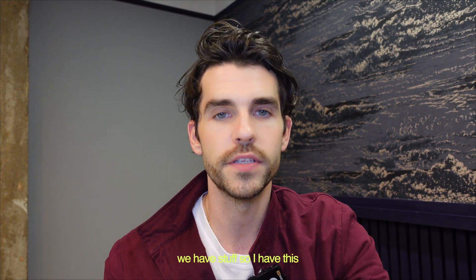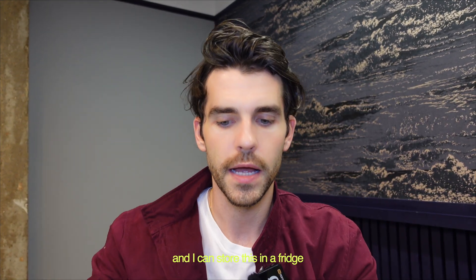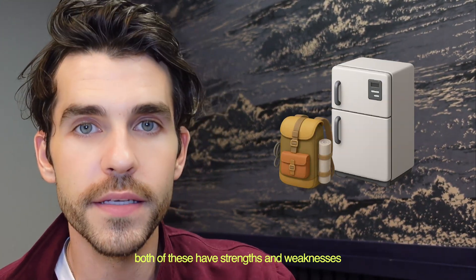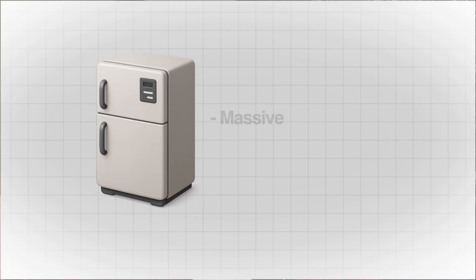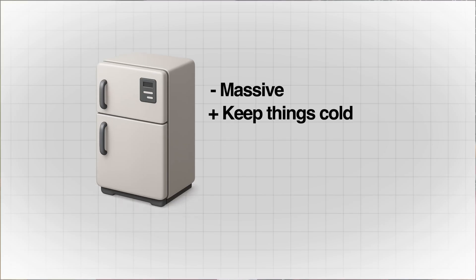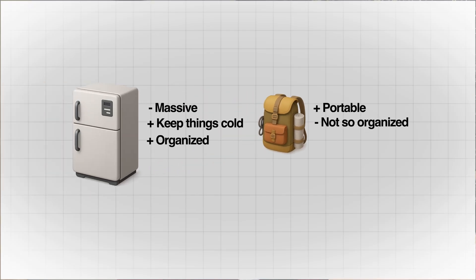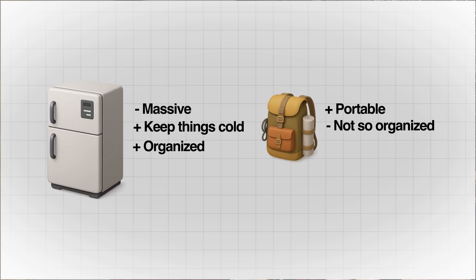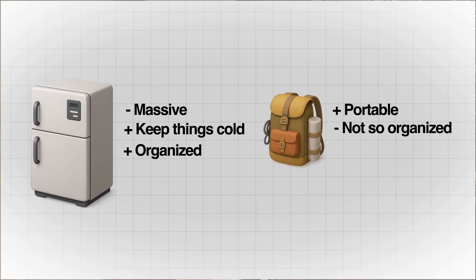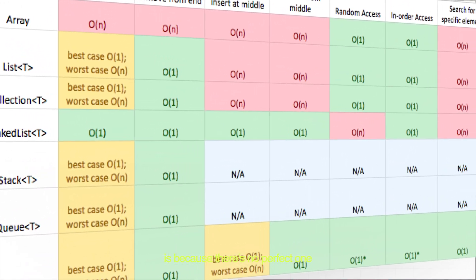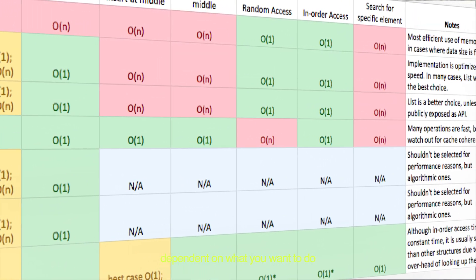Like in the real world, I have this coffee thing and I can store it in a fridge or in a backpack. Both have strengths and weaknesses. A fridge is massive but keeps things cold and is really organized, so you can find what you want really quickly. A backpack is really portable — you can just chuck a lot of stuff in there — but it's not so organized. Data structures using a fridge and backpack metaphor are the same thing. They have different purposes, and that's the same with data structures. The reason there are loads of data structures is because there's no perfect one — they all have different strengths and weaknesses dependent on what you want to do.